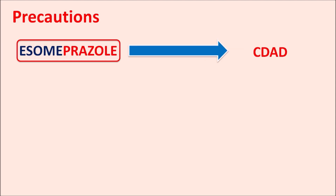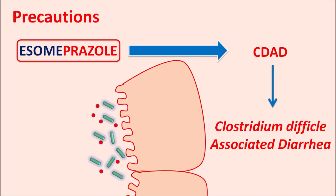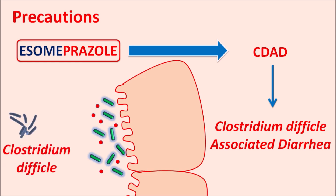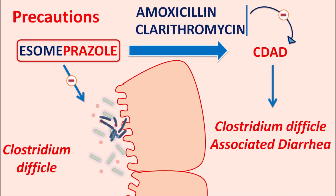Similarly, this drug can also produce CDAD — Clostridium difficile associated diarrhea. This is diarrhea produced by the organism Clostridium difficile. Normally, protective bacteria (gut flora) in the colon prevent C. difficile from causing infection. But when S-omeprazole reduces gastric acid secretion, it raises the pH and the gut flora may be inhibited, allowing C. difficile to attack the colon and produce diarrhea. Care should be taken when this drug is combined with other antibiotics, which can also contribute to this diarrhea.